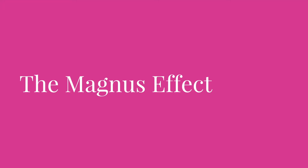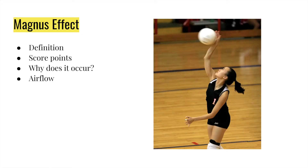The Magnus effect is defined as the generation of a sideways force on a spinning cylindrical or spherical solid immersed in a fluid, such as a liquid or gas, with relative motion between the spinning body and the fluid. Players use this effect to curve the volleyball downwards towards the floor to score points. This occurs because of differences in pressure between the ball and the air it travels through — as the ball spins, it drags the air around it, creating a drag force that builds up pressure in the direction the ball is turning, forcing it to move at a downward angle. This effect allows players to hit the ball with large amounts of force and still land it inside the boundary lines.